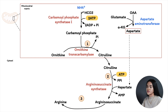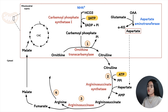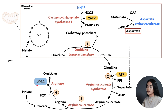In step three, argininosuccinate is converted to arginine and fumarate, catalyzed by argininosuccinase. Fumarate is converted to malate in the cytosol, and malate can enter the mitochondria to join citric acid cycle intermediates. In step four, arginine yields urea and ornithine, catalyzed by the enzyme arginase. Ornithine is then transported back into the mitochondria to participate in the urea cycle again, while urea is the final product for excretion.